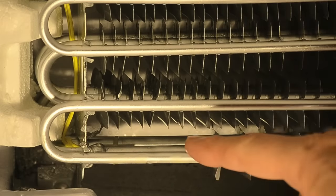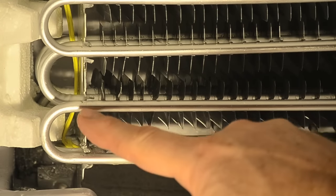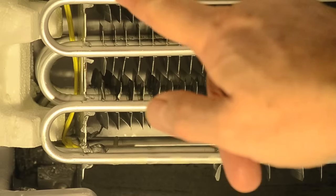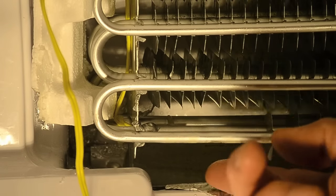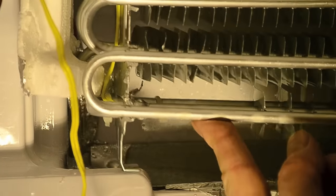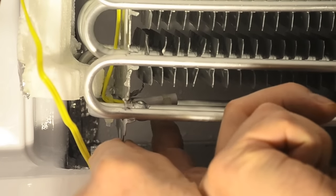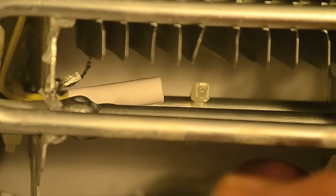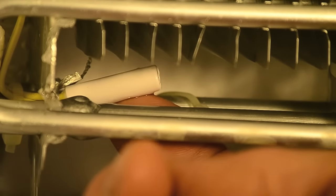This is the defrost sensor. It's a good idea to replace both the defrost sensor and thermal fuse while you have everything torn apart. The defrost sensor is attached with two zip ties. I carefully slid the zip tie off that held the sensor to the coil. You can leave the old zip tie where it is. It's hard to reach and it won't cause any harm.